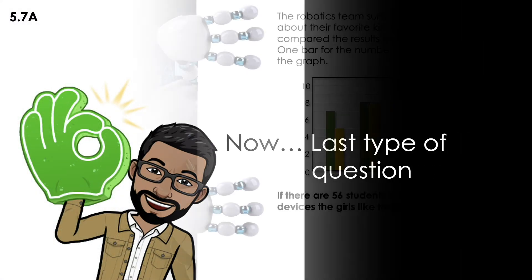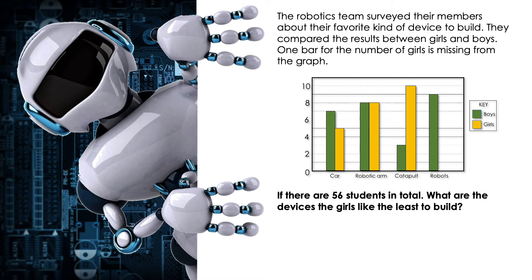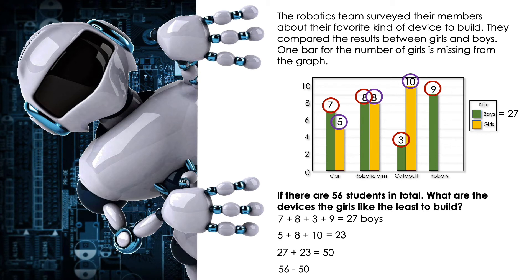Now, last type of question. If there are 56 students in total, what are the devices that girls like the least to build? We're going to use this as a review. The first part was to put the number on the top of each of the boxes. Now I'm going to combine all the students that I have in my graph. First, the boys give me a total of 27 boys. Then the girls give me a total of 23 girls. If I combine boys and girls, it gives me a total of 50 students. Because I want to find how many girls, we have to subtract the total minus the amount of students that we already have here, and it gives me a leftover of six. Those six are the girls who selected robots.